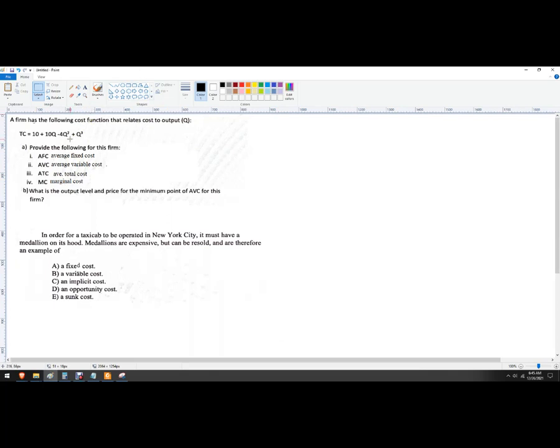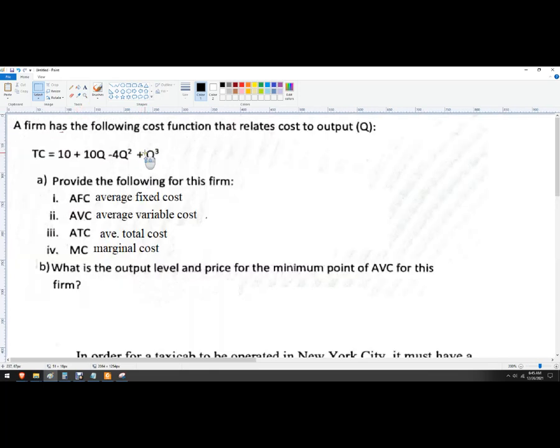So a total cost function is just a mathematical expression that shows you what the cost would be if you produce a certain amount of output. So you can plug in, if I want to produce 10 units, you plug in a 10 there, it tells you how much it costs, probably 100 units, a million units, zero units. It'll kick out an answer.